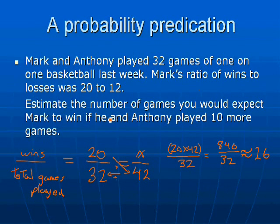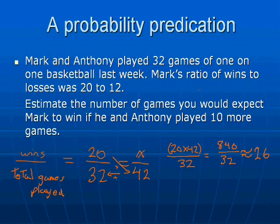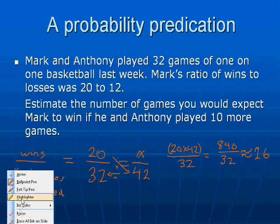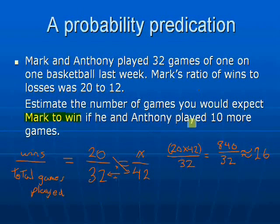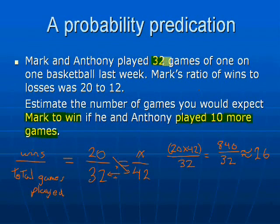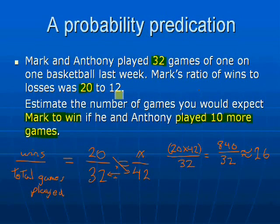Sorry for that — this is why you have to be careful with these questions and read them all the way through. What I did was I saw 'Mark's ratio of wins to losses' and assumed that's what I was looking for, but I didn't finish reading the question thoroughly. The question asks for the number of wins relative to total games played. So the important numbers are 32 — the total games played — and 20 — the total wins. The 12 losses was just a number put in there to distract you. Read your questions carefully and don't make the mistake that I did.